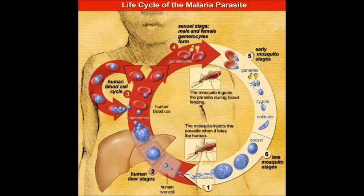There are scores of named Plasmodium species which infect various species of vertebrates. Four species are considered true parasites of humans, as they utilize humans almost exclusively as a natural intermediate host. Those are Plasmodium falciparum, Plasmodium vivax, Plasmodium ovale, and Plasmodium malariae.